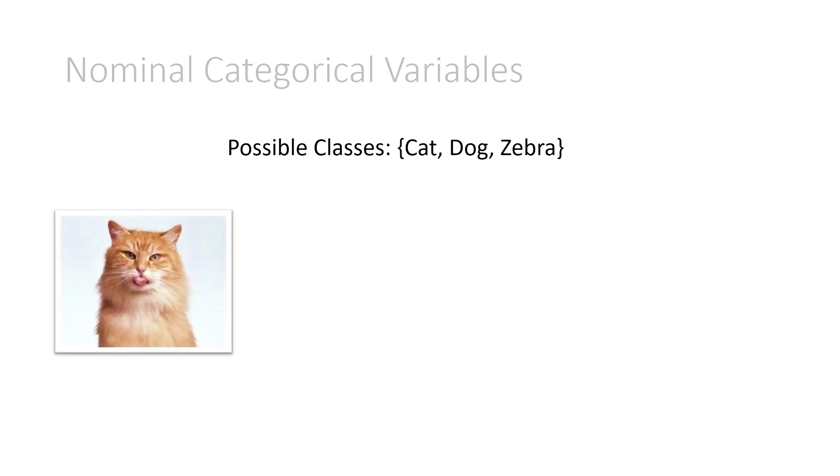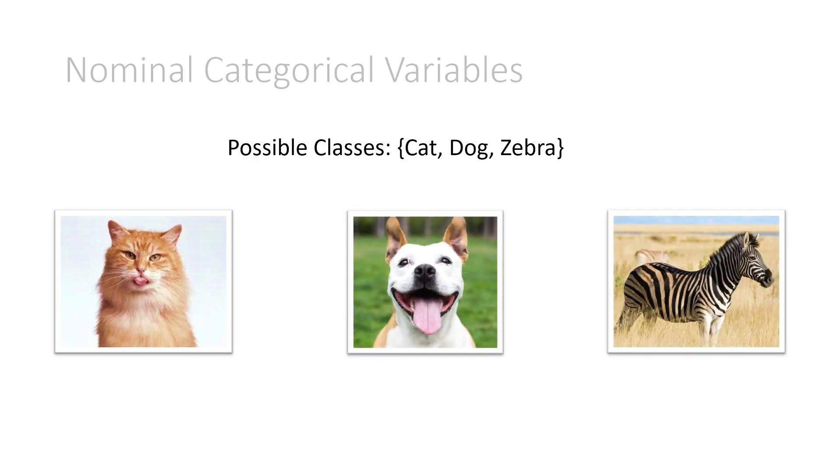So an image is maybe a cat, a dog, or a zebra. It has to be one of those three objects, nothing else. This is nominal. There is no order to the classes. However, the concepts of cat, dog, and zebra are not numerical. Let's look at a nominal categorical variable encoding.